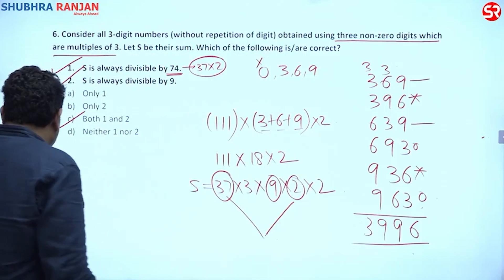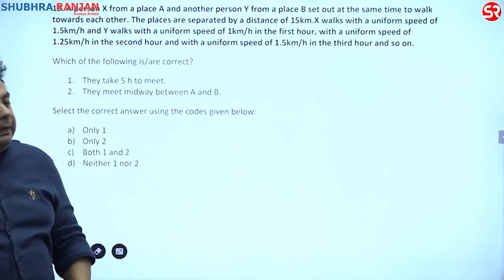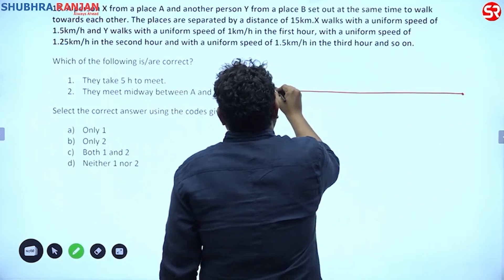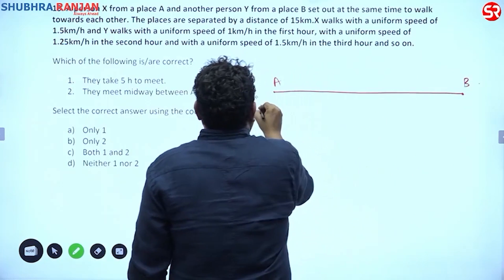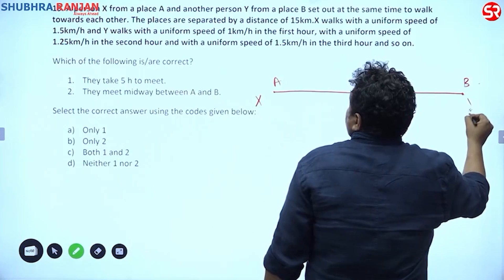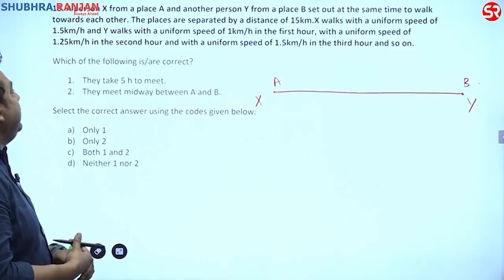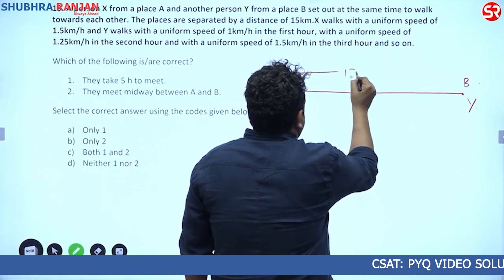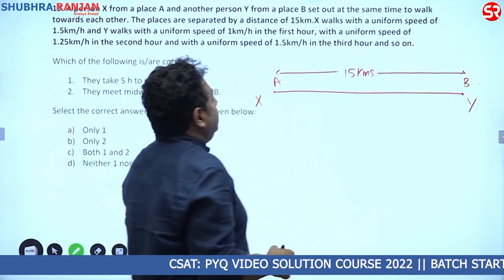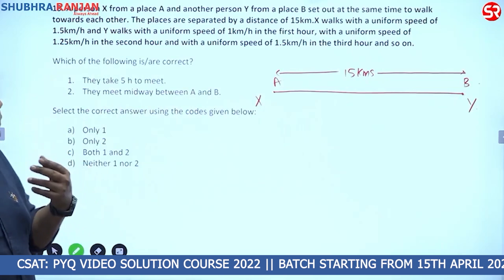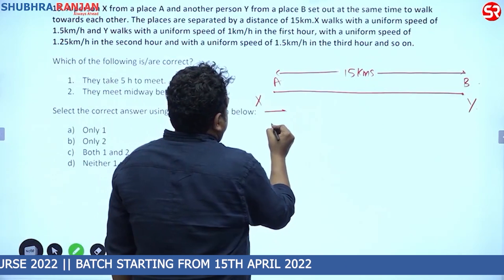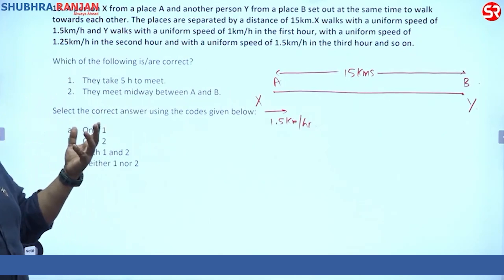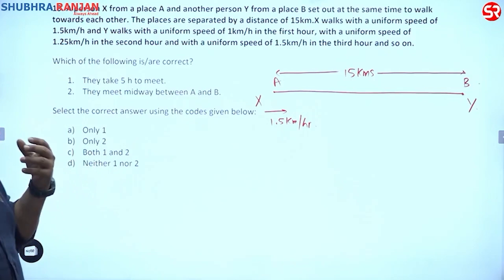Next problem: Person X from place A and person Y from place B start walking toward each other at the same time. The places are 15 kilometers apart. X walks at a uniform speed of 1.5 km/h.